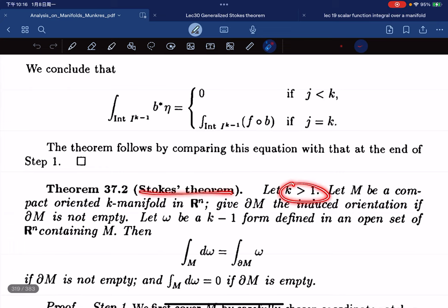So k is greater than 1, and let M be a compact oriented k-manifold in R^n, and we have boundary-induced orientation if it's not empty. And we let omega be a k-1 form, so we're going to talk about this differential form on an open set of R^n containing M.